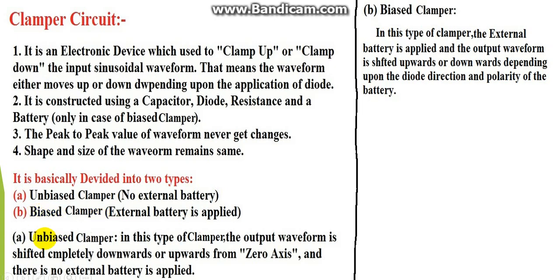The unbiased clamper means in this type of clamper, the output waveform is completely shifted downwards or upwards from the zero axis.